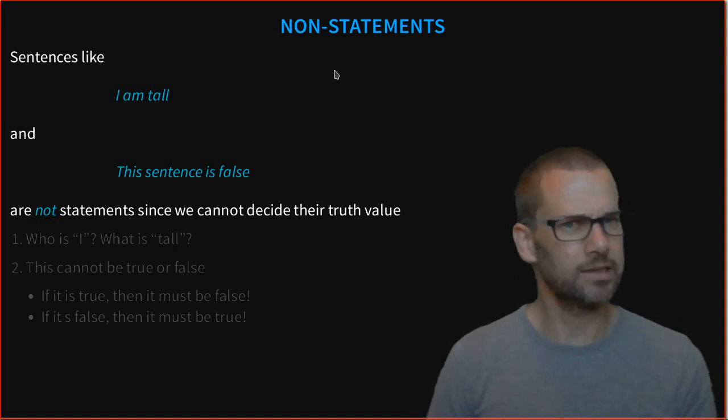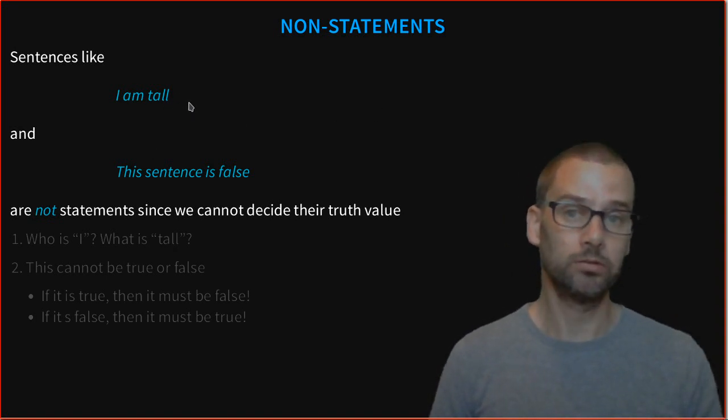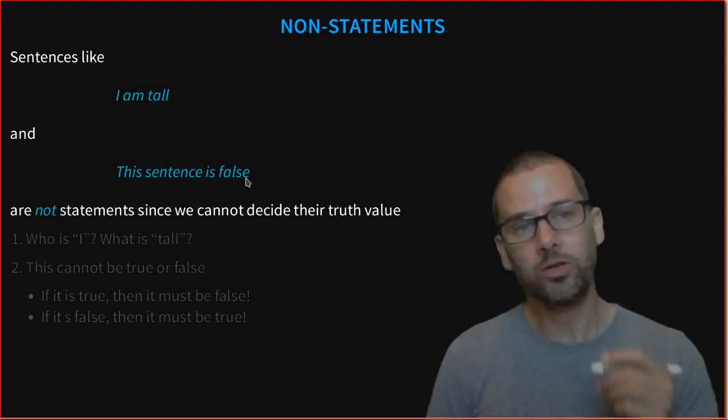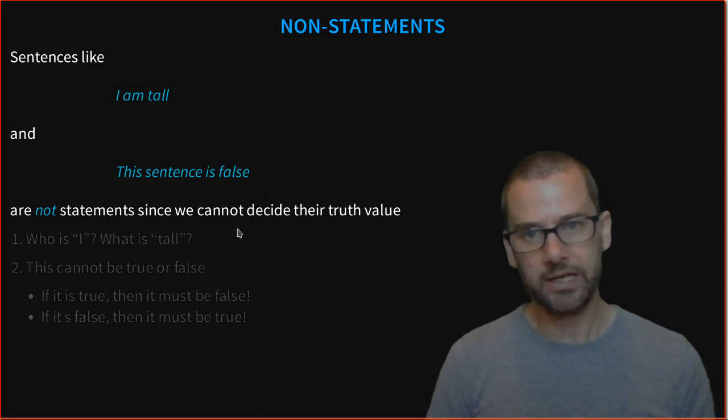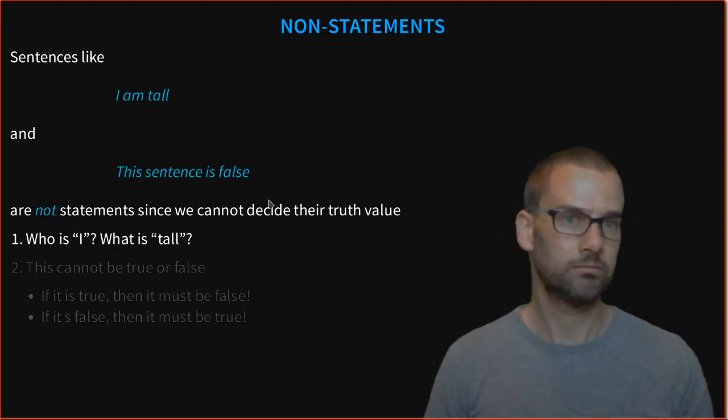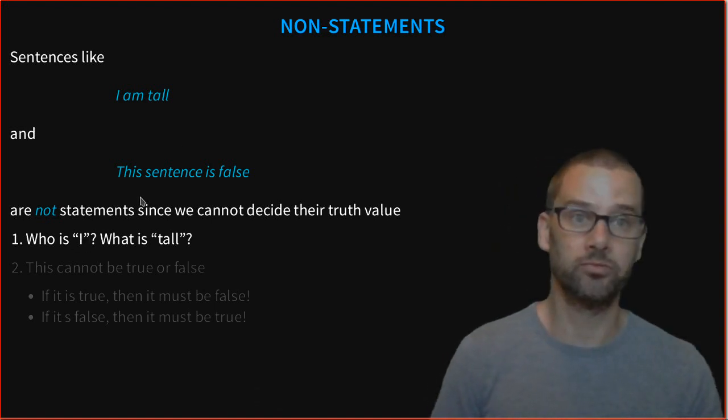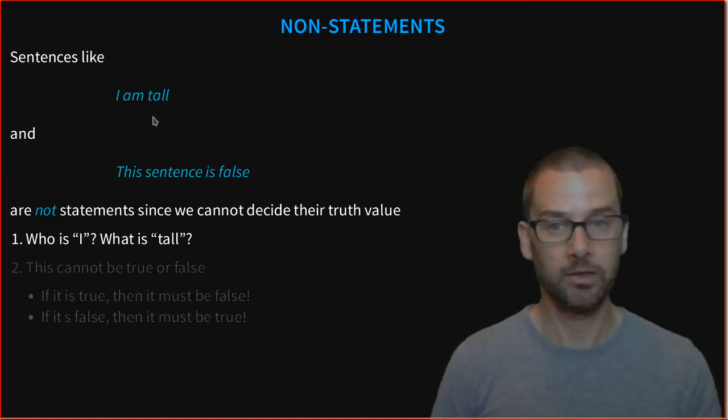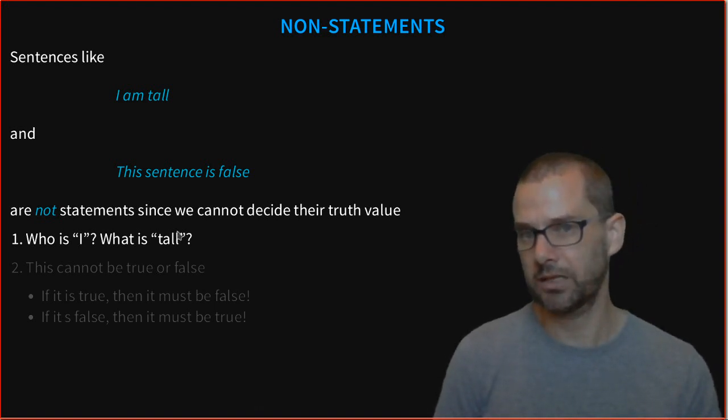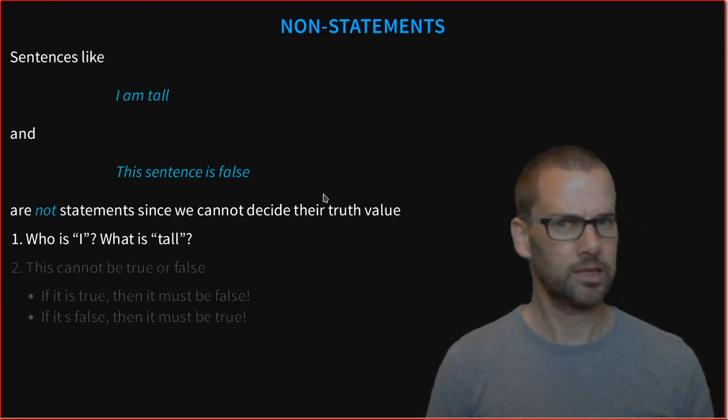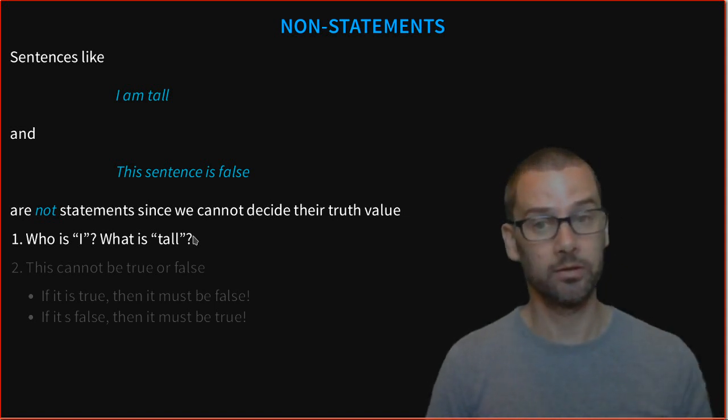On the other hand, here's some non-statements. Sentences like "I am tall" and "this statement is false" are not statements because we can't decide their truth value. In particular, for the first one, who's I and what is tall? I will depend on who's reading the statement or who wrote the statement. And tall, well, that can be quite subjective. If you're a basketball player, tall is quite different from the rest of the population. This is ambiguous. It's not well-defined enough for us to decide a truth value.